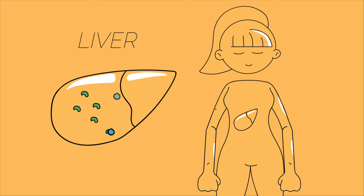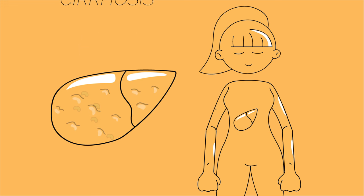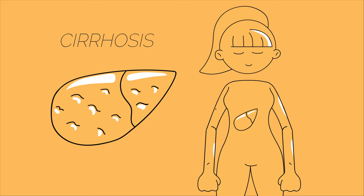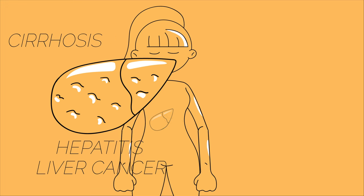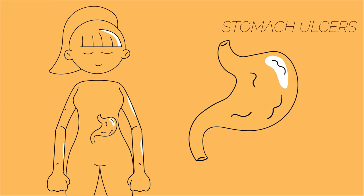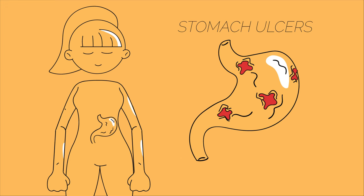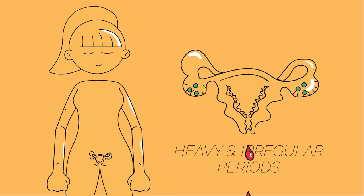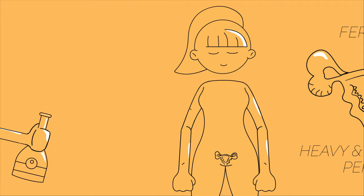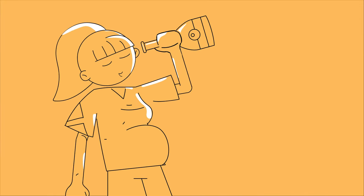The toxic products damage the liver, and over time this leads to cirrhosis. It can also cause hepatitis and liver cancer. Stomach ulcers can be caused as alcohol irritates the stomach lining.